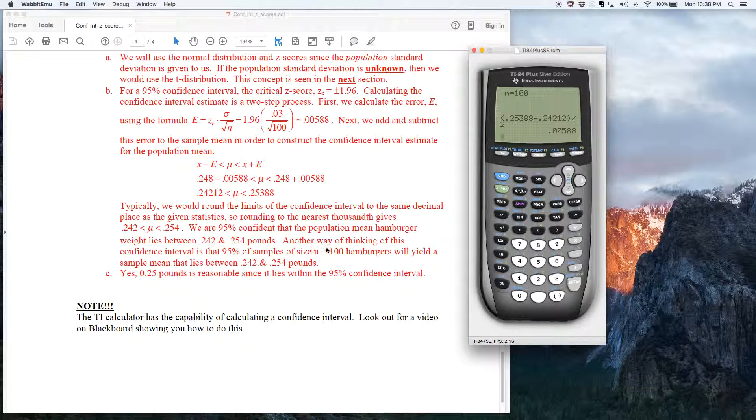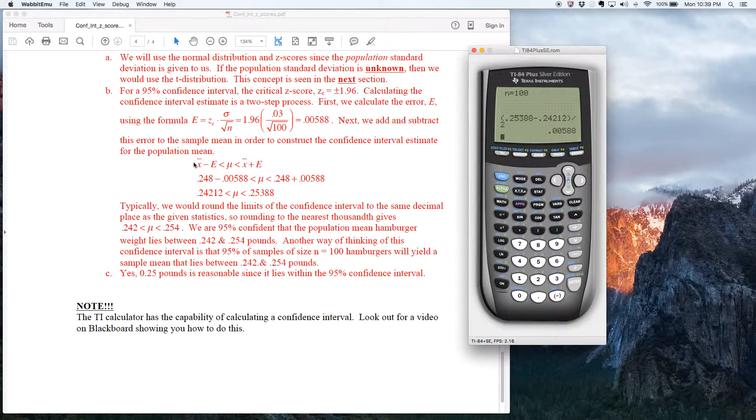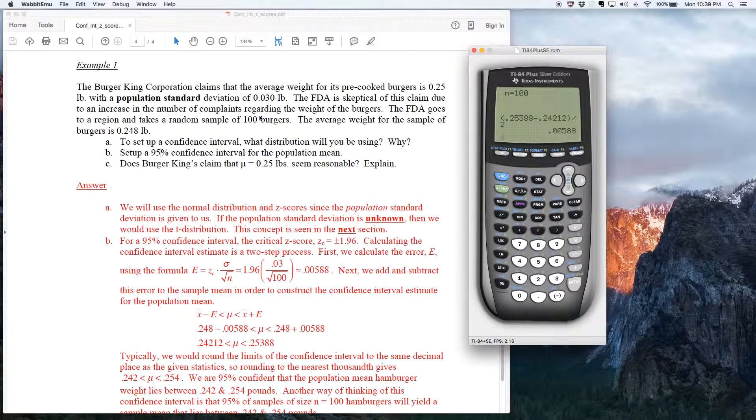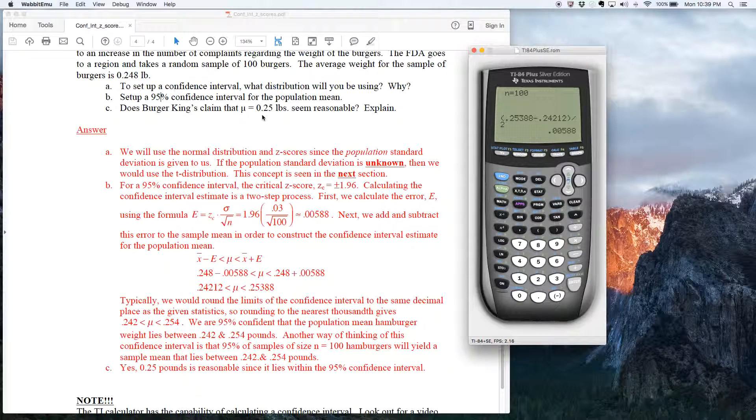Really, how we should think of it is, if you start grabbing samples of 100 hamburgers and calculating the confidence interval, 95% of those confidence intervals will have the real population mean inside of it. It's probably a better interpretation. There's so many ways to interpret this thing. The part C to this just asks if Burger King's claim, because remember Burger King said, hey, our quarter pounders weigh a quarter pound. They want to know, does their claim seem reasonable? And then explain.